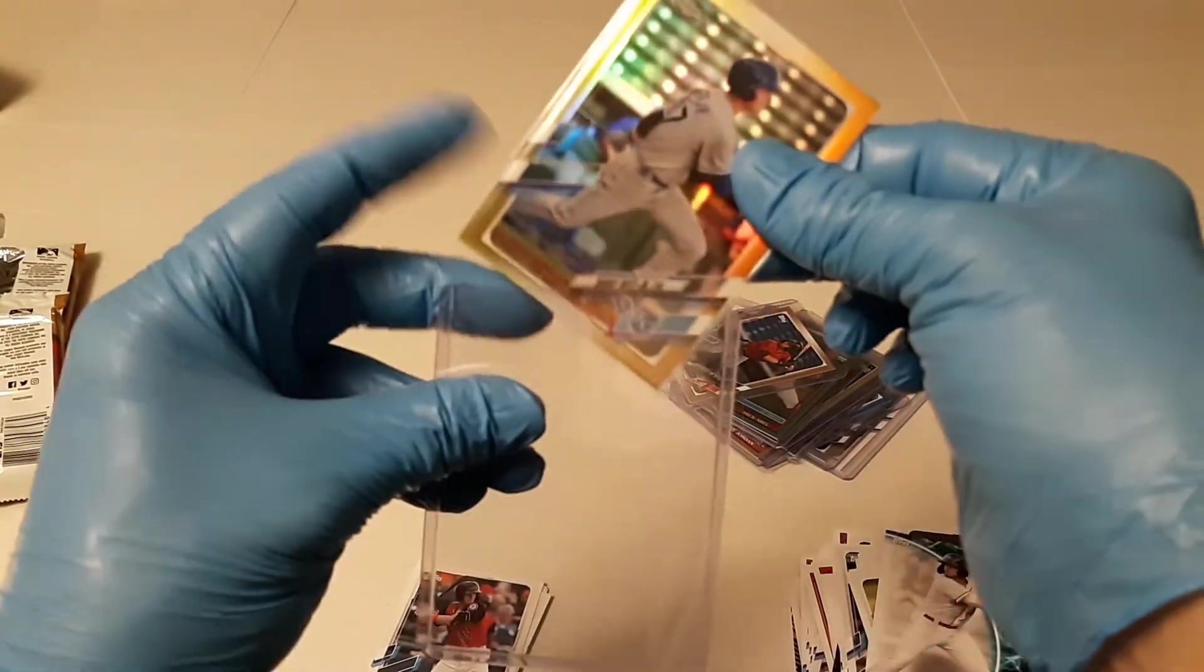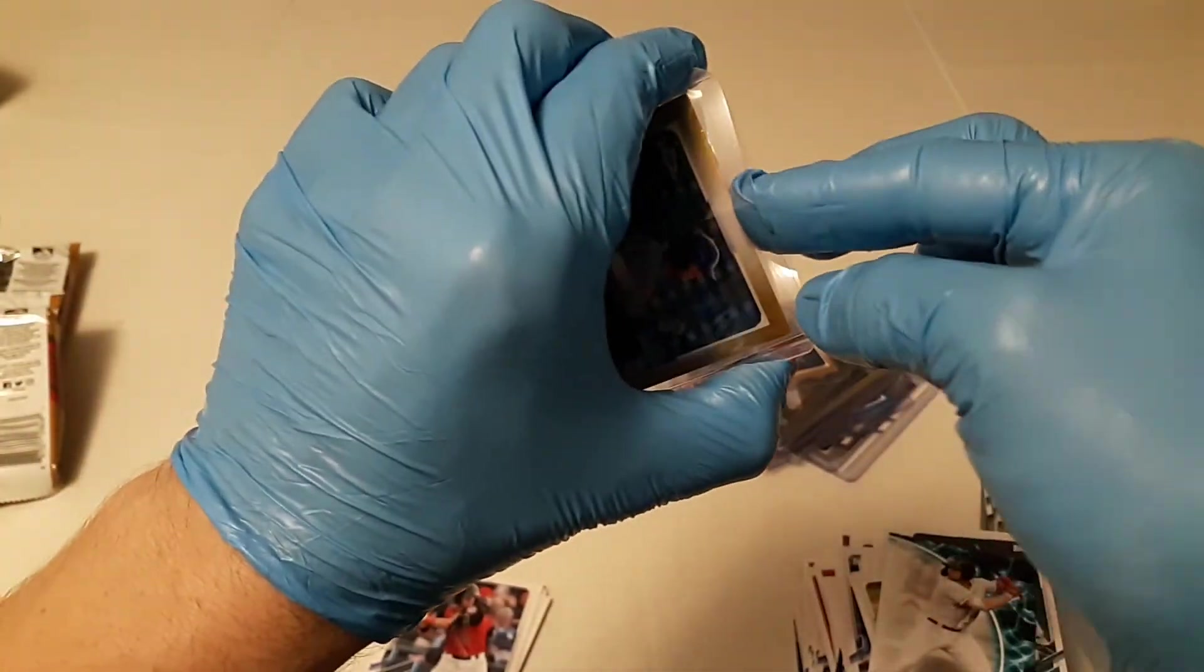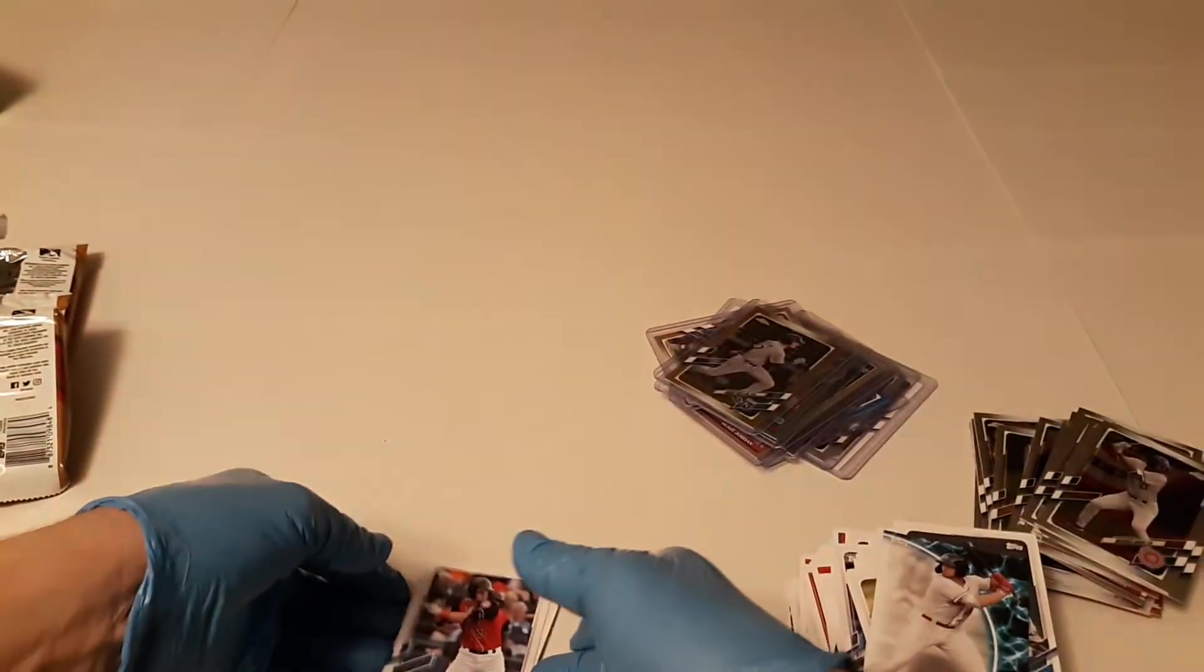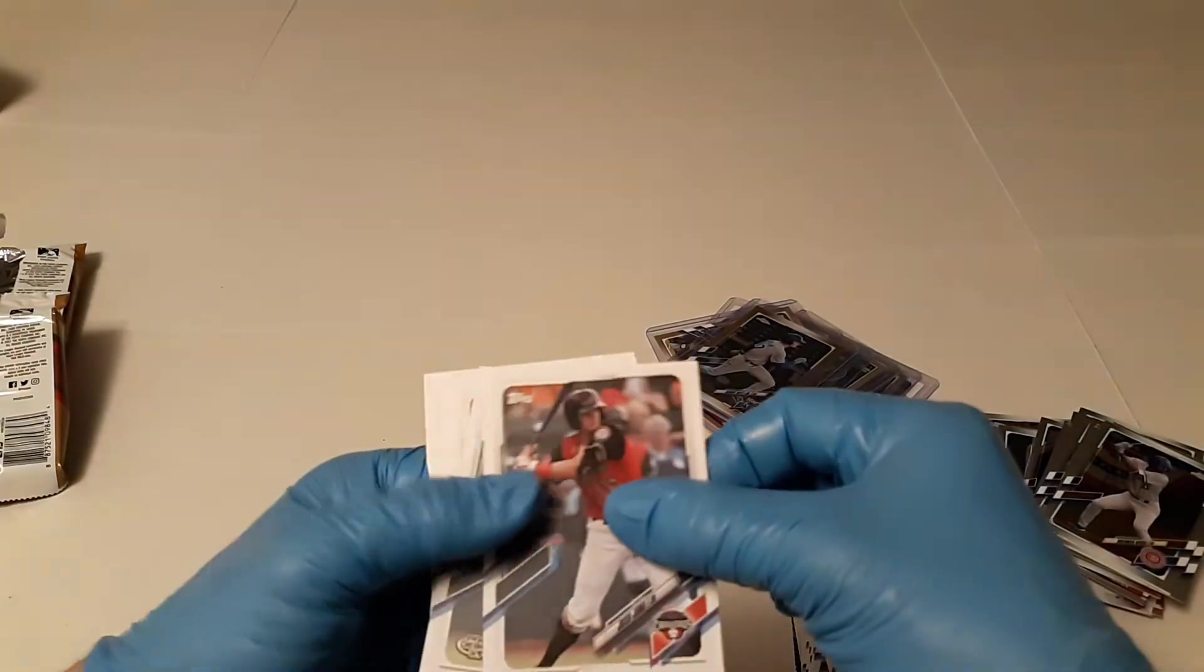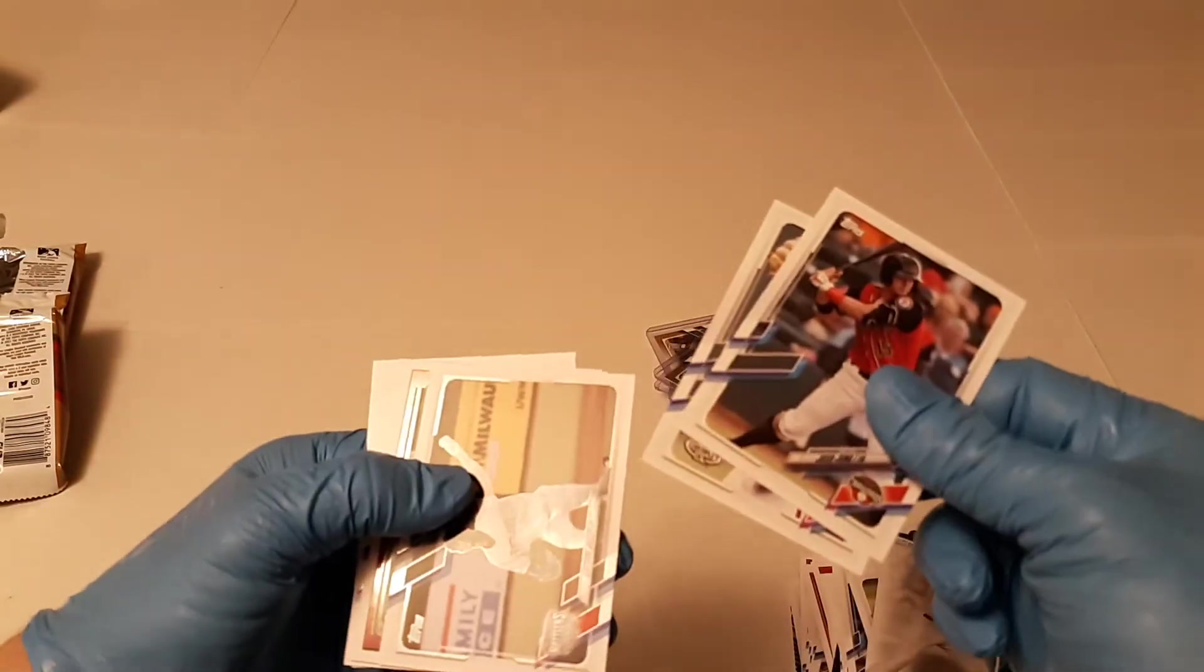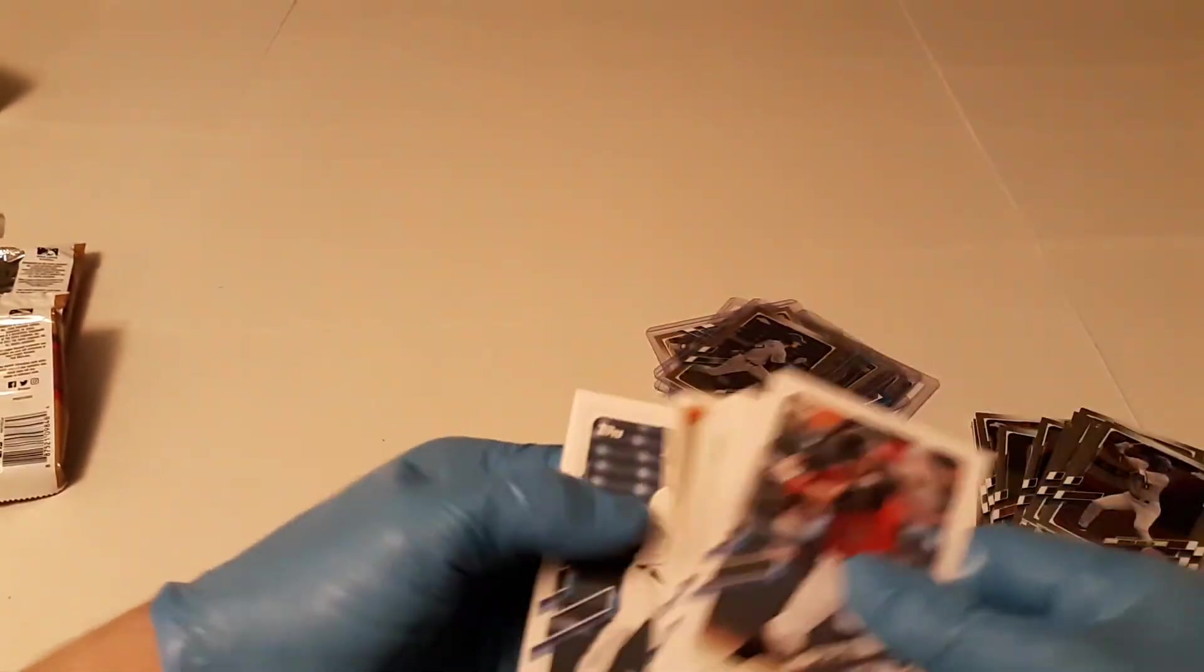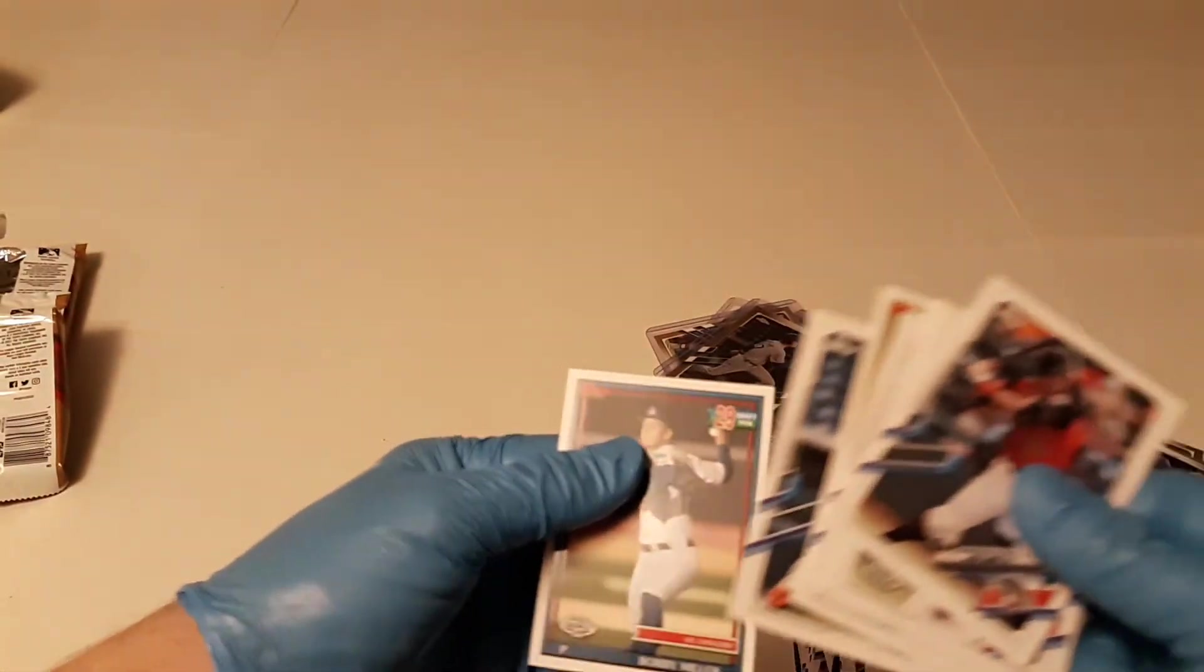Talk about pulling some crazy cards. I mean, there's some real fire in this box. Josh Jung, Spencer Strider, Antoine Kelly, Reed Detmers, Simeon Woods Richardson, Garrett Mitchell, Hunter Bishop, Bobby Miller. So, all right.